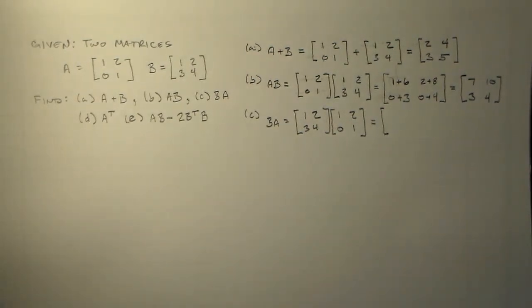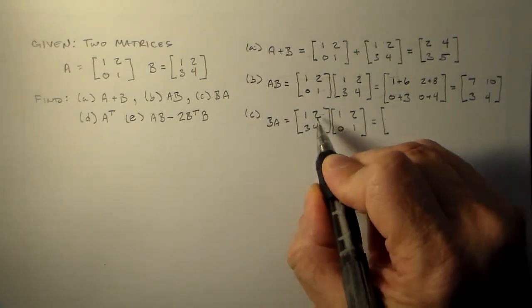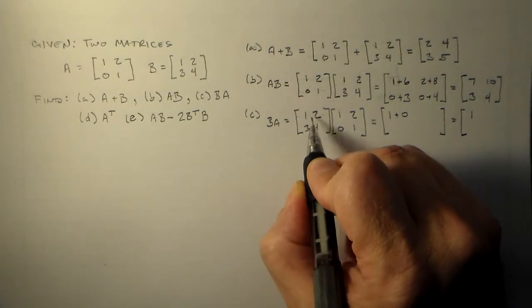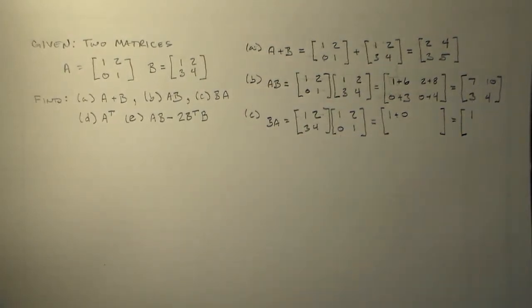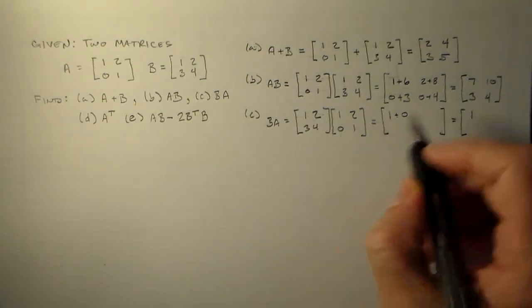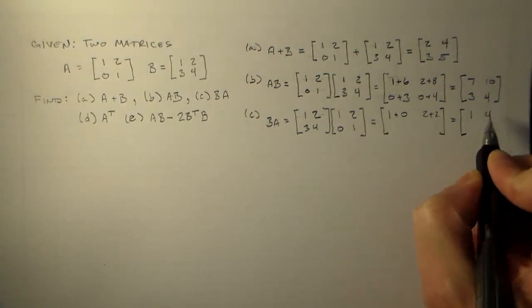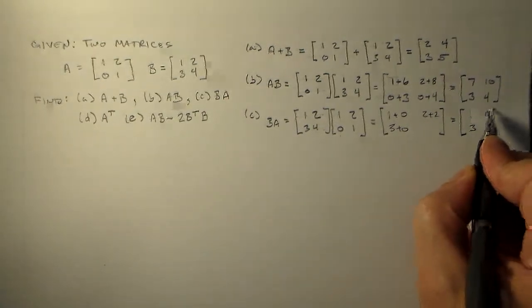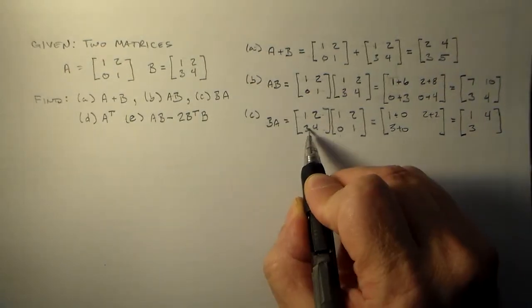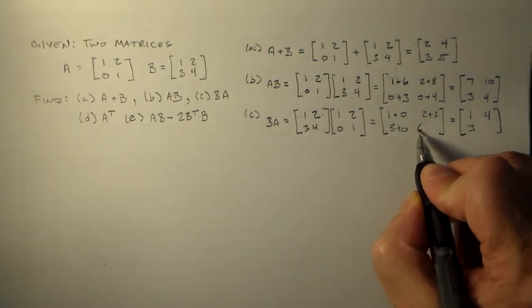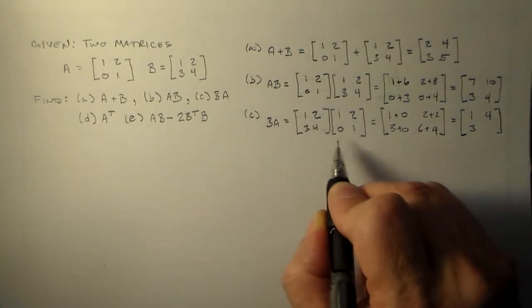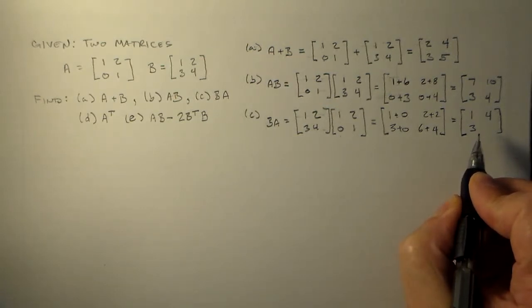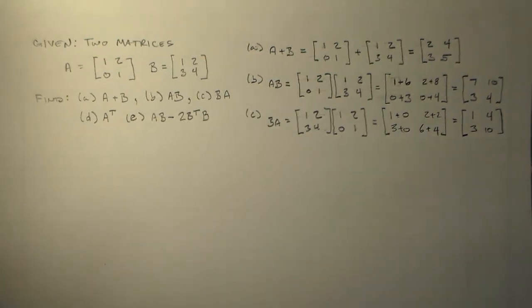So now we're going to go ahead and do the same sort of thing. B times A. 1, 2 times 1, 0. So 1 times 1 is 1, 2 times 0 is 0. So that's going to be a 1 up here. And you already see these two matrices are different. I just switched the order and the matrices are different. 1, 2 times 2, 1. So that's 2 plus 2 is 4. 3, 4 times 1, 0. 3 times 1, 4 times 0, 3 plus 0. So that's 3. And then we have 3, 4 times 2, 1. So that's 6 plus 4, which is 10.